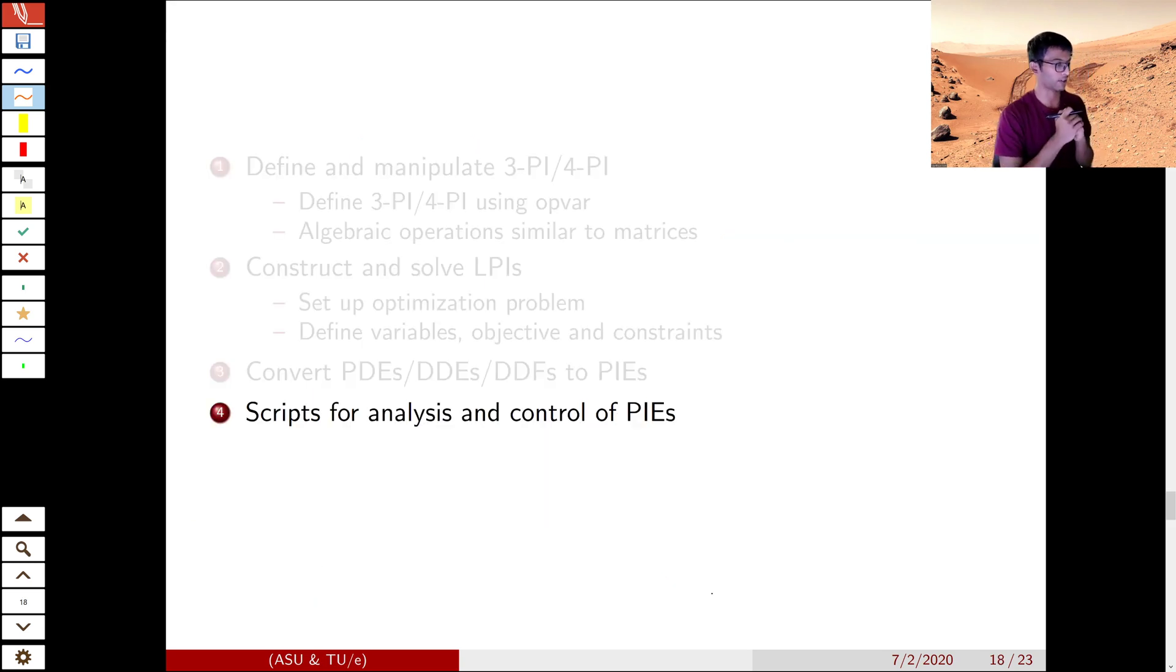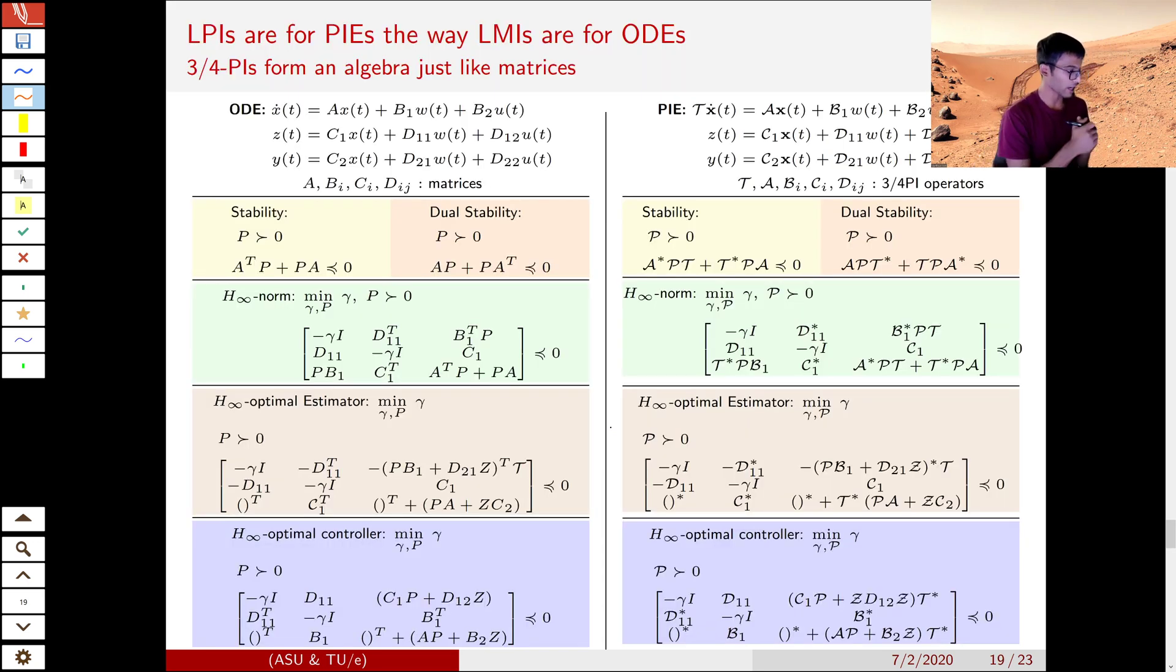What can we do with this PIE representation? As we said, we want to analyze and control them. And the inspiration comes from the ODE systems and the LMI framework. When we have nine matrix representation, we have many standard LMIs that help us in analysis and control. And PIE representation, just like ODE representation, is algebraic. It has bounded operators. PI operators have the same properties as matrices. And both have no constraints on the state space.